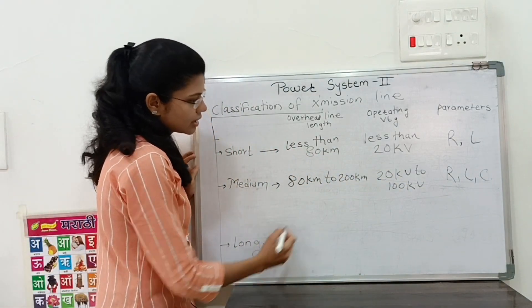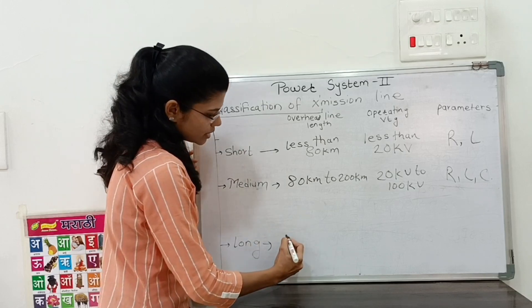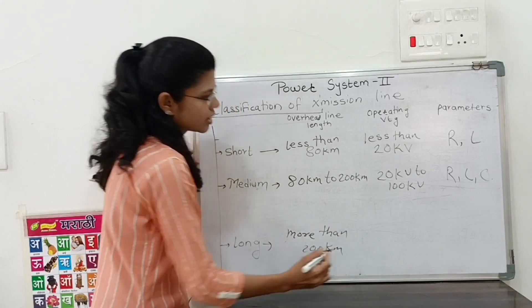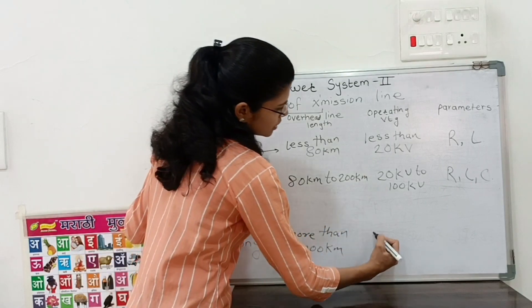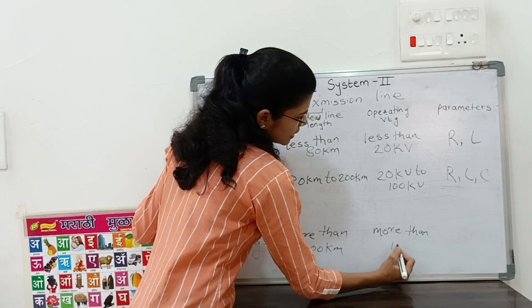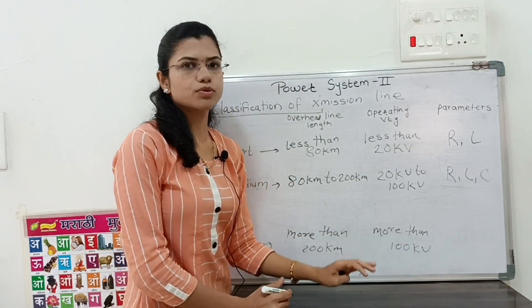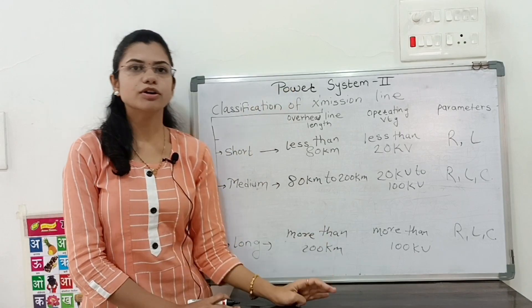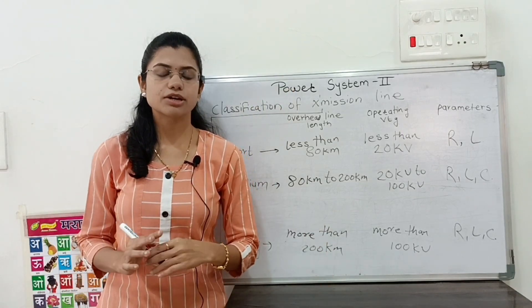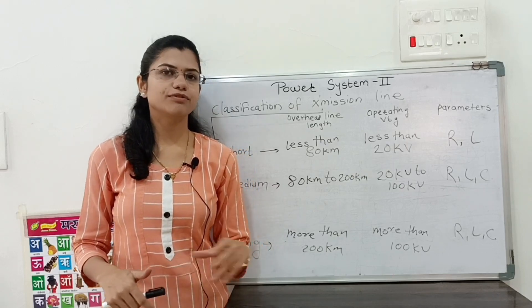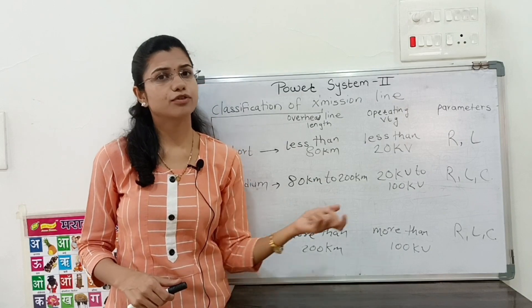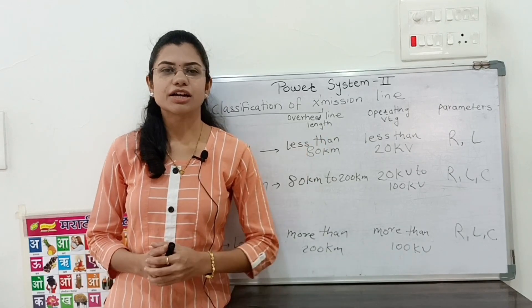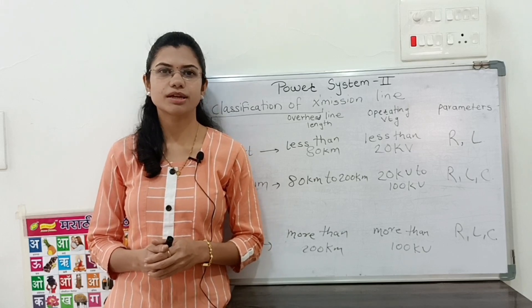For the long transmission line, the overhead line length is more than 200 km and the operating voltage is more than 100 kV. The parameters present are R, L, and C. G is neglected because the leakage current is very very small, and therefore the effect of shunt conductance G is negligible. However, in practical cases, G is present.